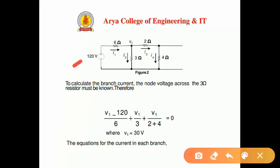With the current source open-circuited, the circuit contains only the 120-volt source, and we label the branch currents as I1', I2', I3', and I4'. We apply KCL at the node where we assume voltage V1, and find the value of V1 to be 30 volts. With V1 known, we can calculate the values of I1', I2', I3', and I4'.